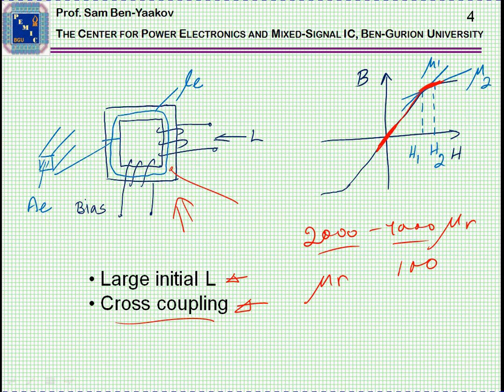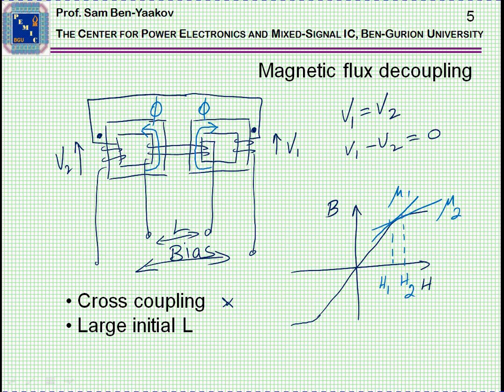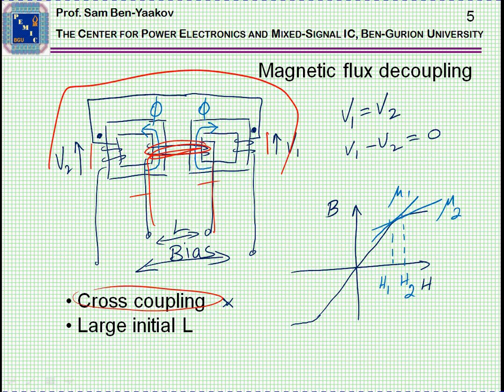We have these two problems with this very simple, which is actually impractical to build. We can overcome the coupling problem by having two cores. It'll be similar cores, identical cores, same size, and we're going to have the inductor winding here in the middle on the two cores, and the bias winding in series here.